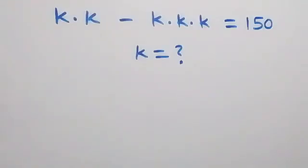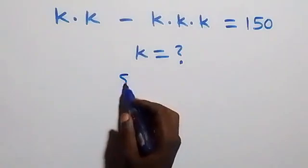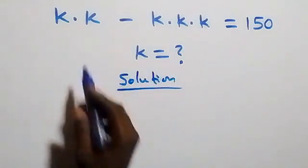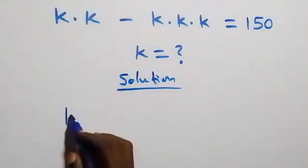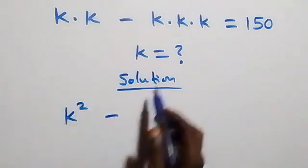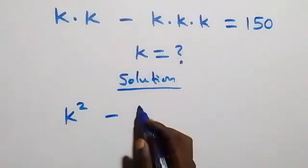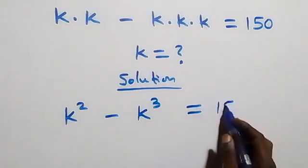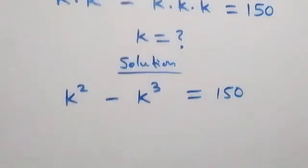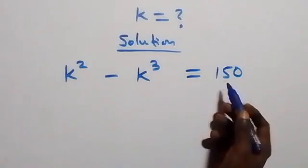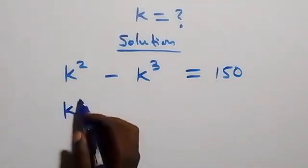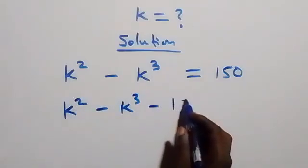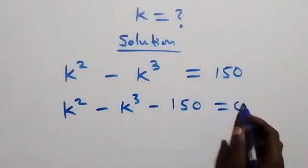Hello, you are welcome. How to solve this nice algebra problem. From what is given here, k times k we can write as k squared, then minus k times k times k, that's k cubed, equals 150. Taking 150 to the other side, this becomes k squared minus k cubed minus 150 equals zero.